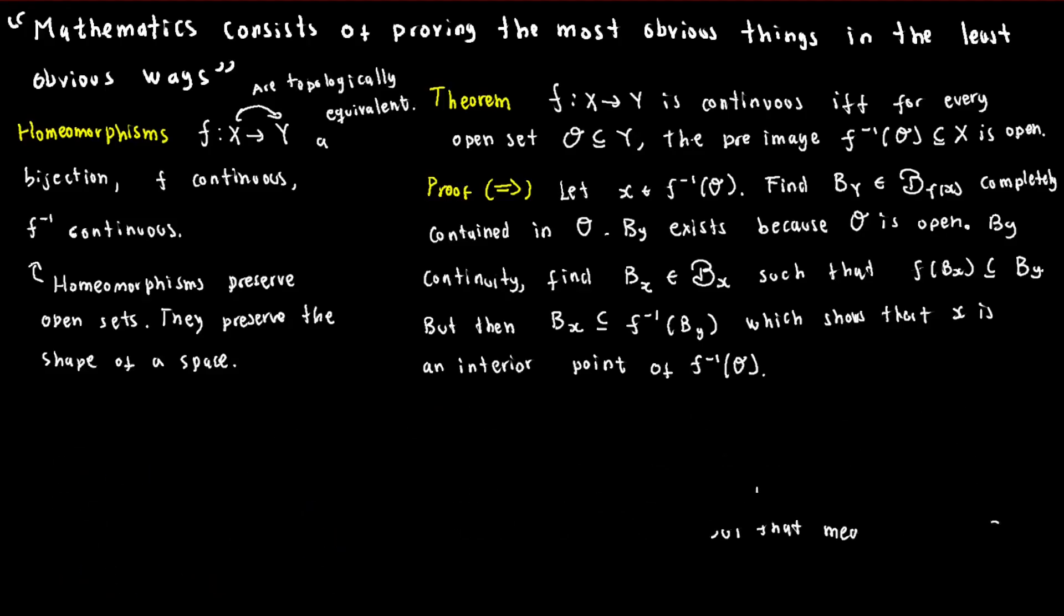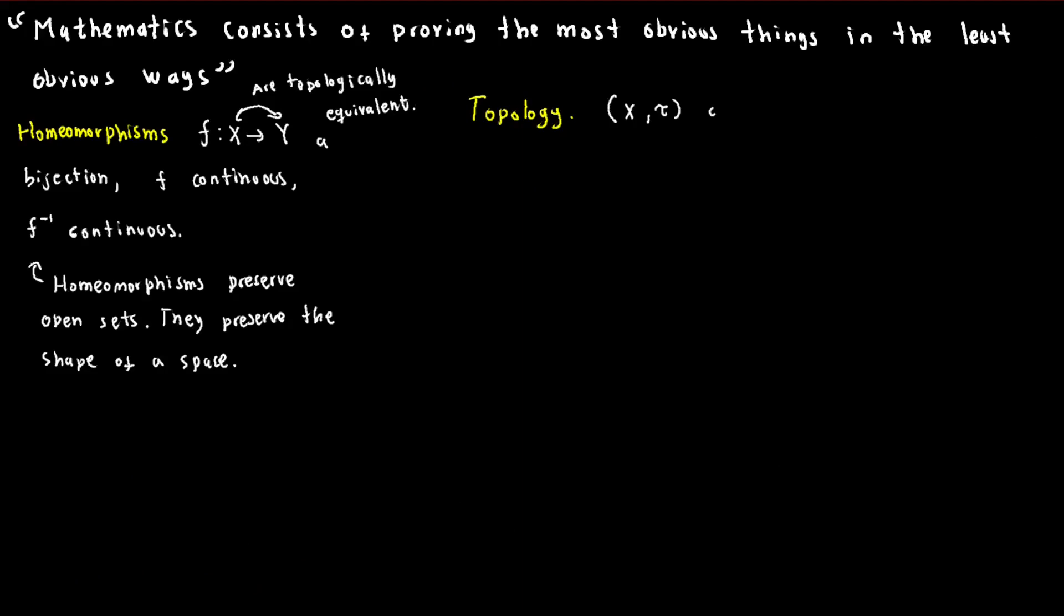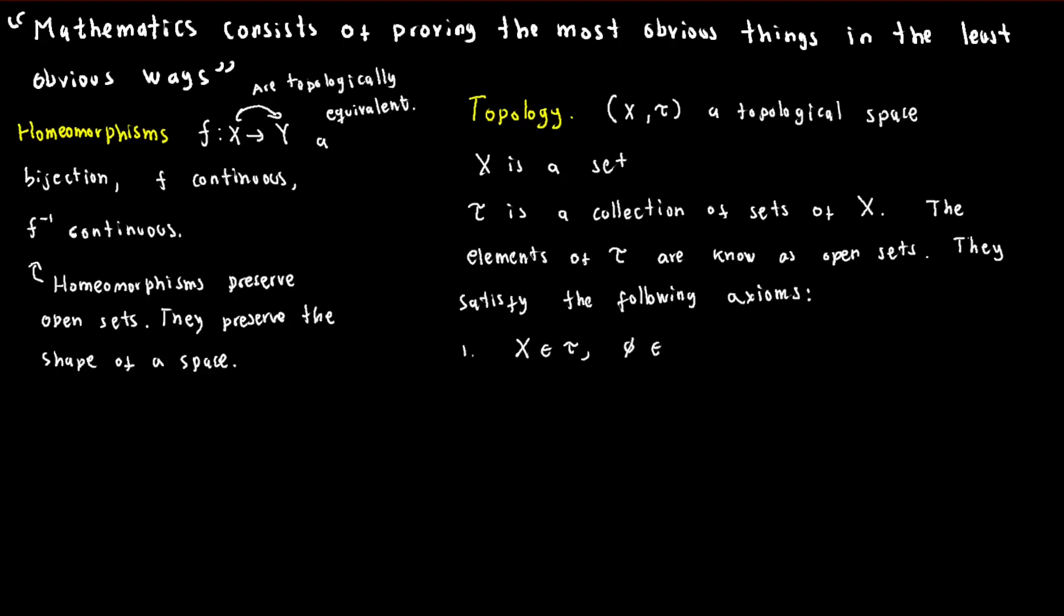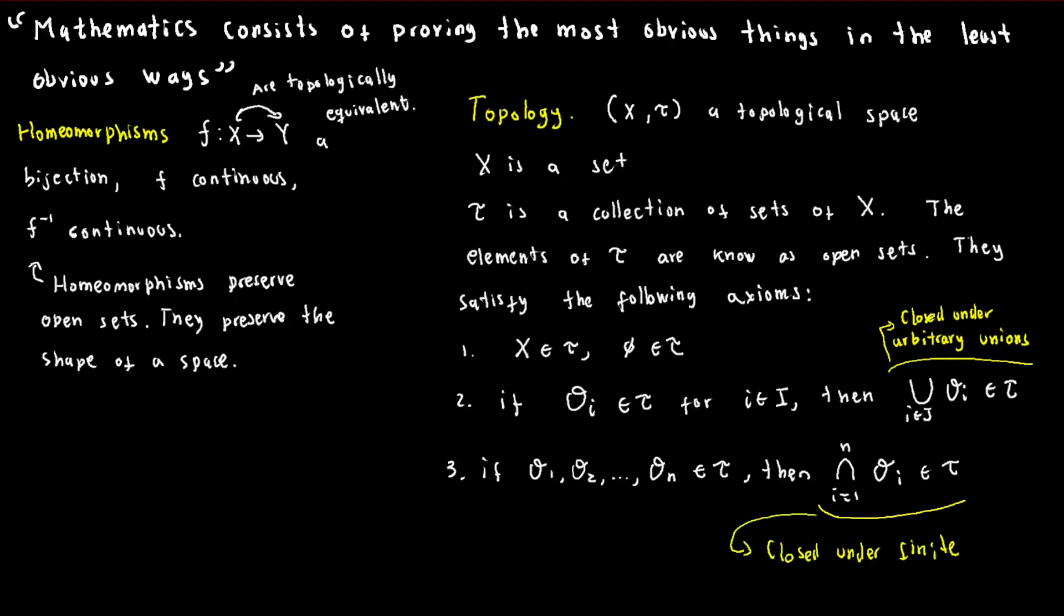The open sets define what is known as the topology of a set. In mathematical terms, a topology over a set X is a collection of subsets of X, known as the open sets, that satisfy the following axioms. First, both X and the empty set are open sets. Second, arbitrary unions of open sets are open. And third, finite intersections of open sets are open.